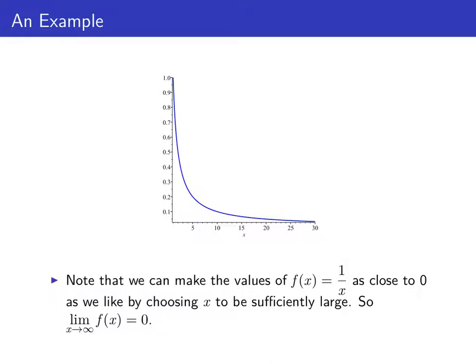Remember that if we can make the values of f(x) as close to some number as we want by choosing x to be large enough, then our function f has a limit at infinity. In this case, we can make all the values 1 over x as close to 0 as we like by choosing x to be sufficiently large. So we say that the limit of f(x) as x approaches infinity is 0.